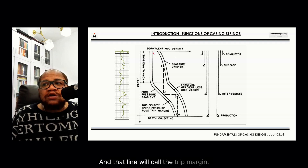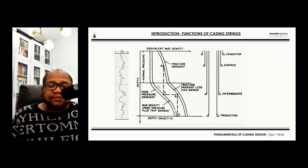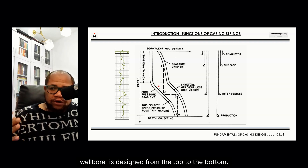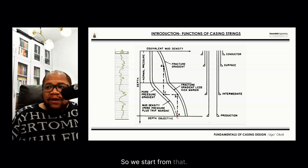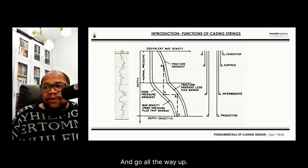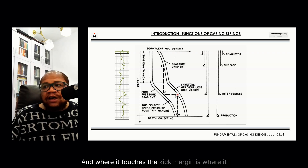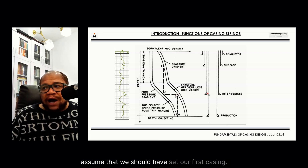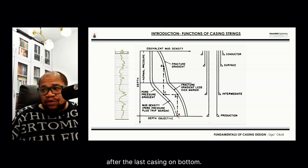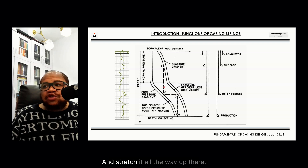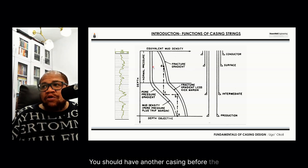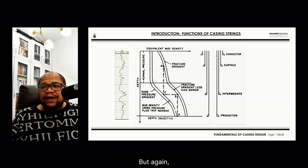A well is designed from the bottom to the top. We start from the minimum value of the trip margin and go all the way up; where it touches the kick margin is where we should have set our first casing after the last casing on bottom — that is from A to B. You can see it corresponds to that point. Then you stretch the next line from the trip margin all the way up, where you should have another casing before the conductor casing at the top.